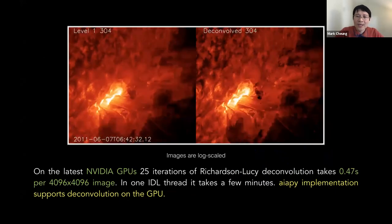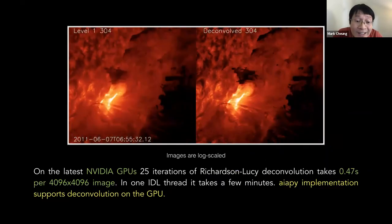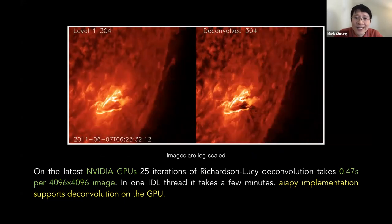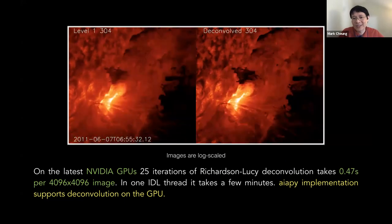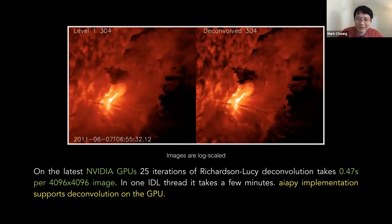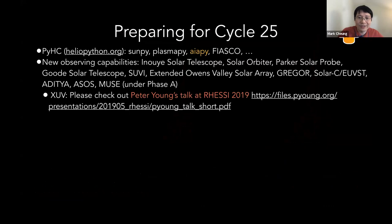Regarding the point spread function: because of the diffraction pattern from the mesh in the filters, you get a PSF that produces an X-pattern artifact. You can deconvolve this very quickly with GPUs, and there is both an aiapy routine and an IDL routine for that — the aiapy version is GPU-accelerated. When images are not saturated, the diffraction pattern can be removed very effectively.